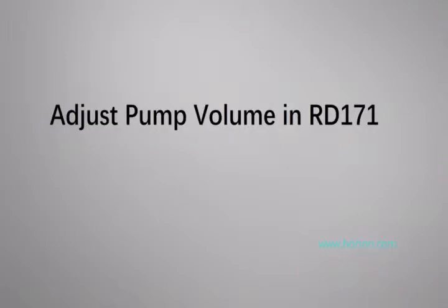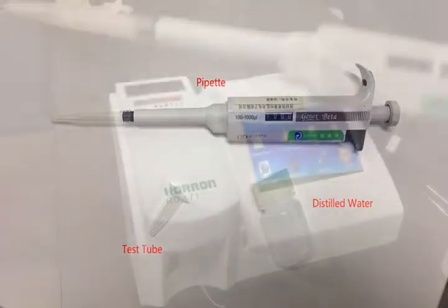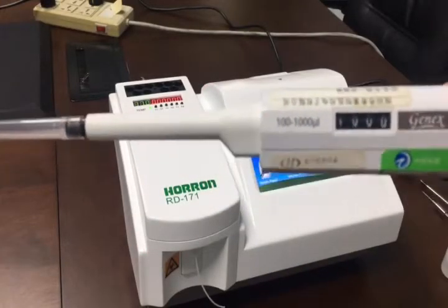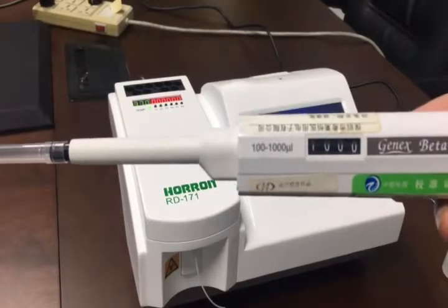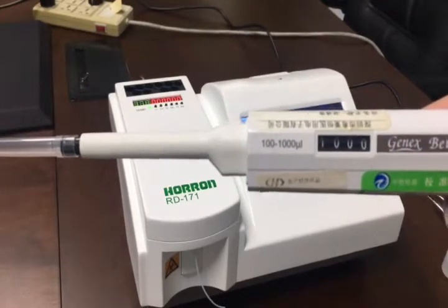In this video, it will show how to adjust pump volume. These are the tools you need. We use a pipette to set it at 1000 microliter.